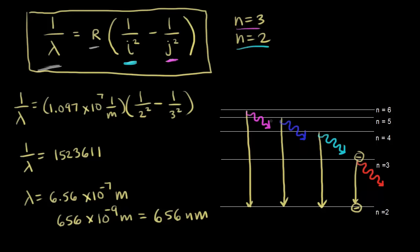Now we have a way of explaining the line spectrum of hydrogen that we can observe. Since we calculated the Balmer-Rydberg equation using the Bohr model, the Bohr model is what allowed us to do this — it explains these different energy levels. When you look at the line spectrum of hydrogen, it's like you're seeing energy levels, because it's the only real way you can see the difference of energy. So energy is quantized. We call this the Balmer series for hydrogen.